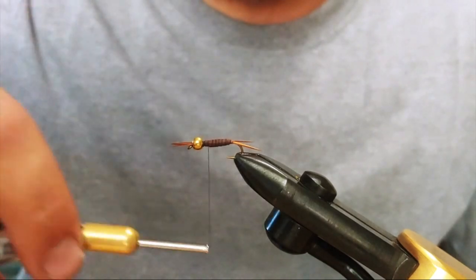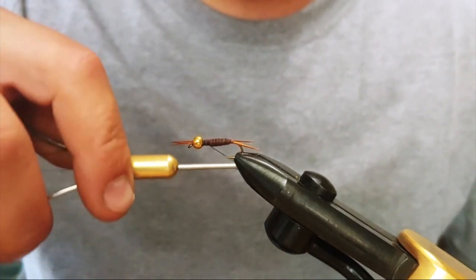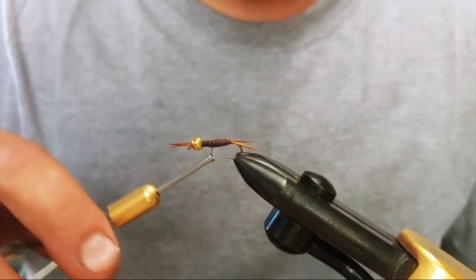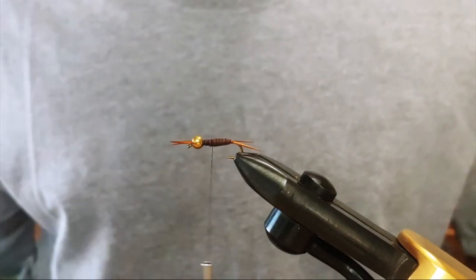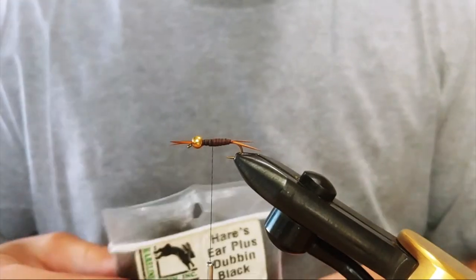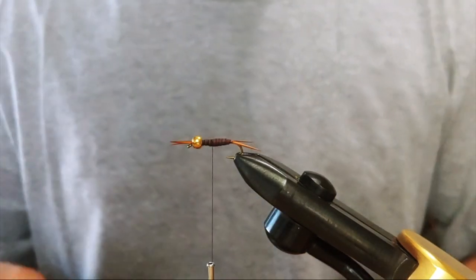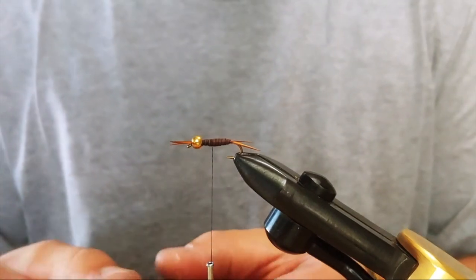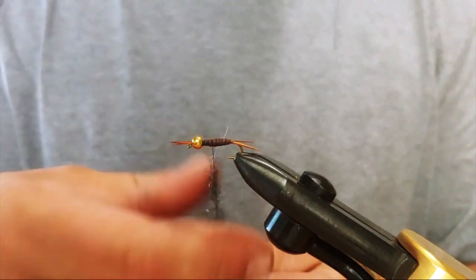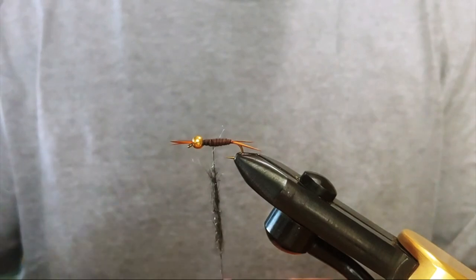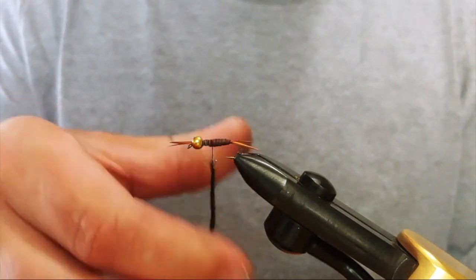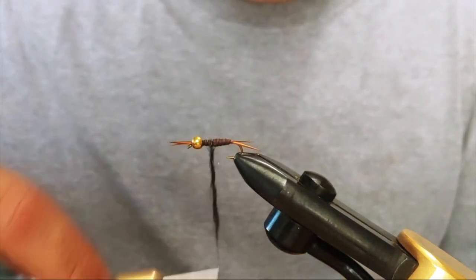I'm going to work my way back a bit here. So for my dubbing, I'm using Hare's Ear Plus in black. I'm just going to do it a little loose. I want to be able to get a little bit of body out of it.